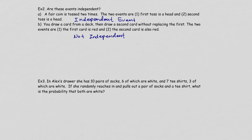What about example three? Alex's drawer has 10 pairs of socks, 6 of which are white, and 7 t-shirts, 3 of which are white. If she randomly reaches in and pulls out a pair of socks and a t-shirt — pulling socks first as event one, and then pulling a t-shirt as event two — these are independent events.